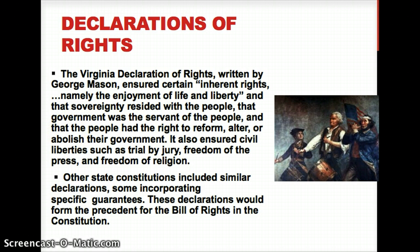The Virginian Declaration of Rights was written by George Mason, and it basically said: we all have rights, we have the right to have those rights protected, and they can't just be taken away. For too long our basic human rights have been taken away, so we as a state need to come up with a constitution that protects our unalienable rights — life, liberty, and then depending who you ask, happiness or property.